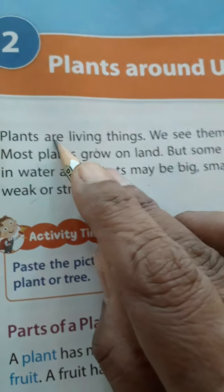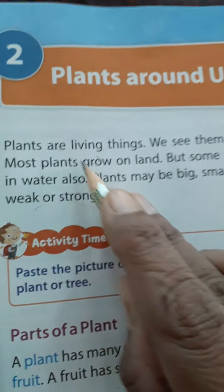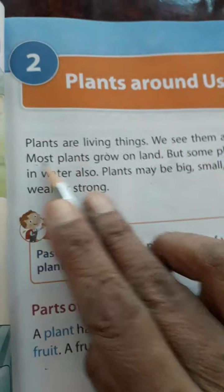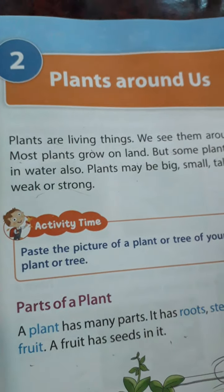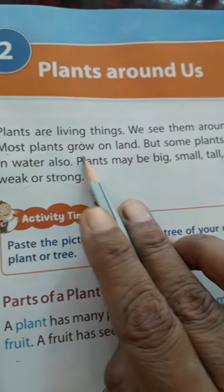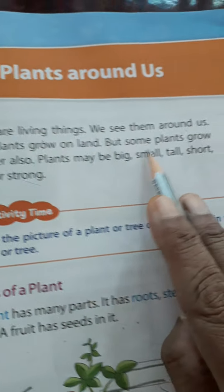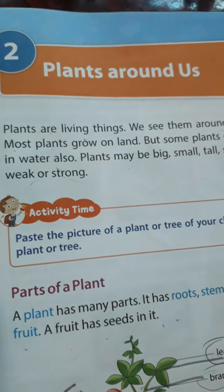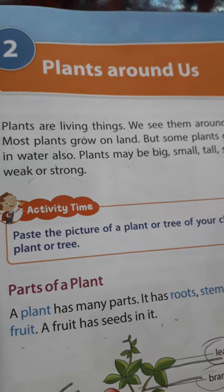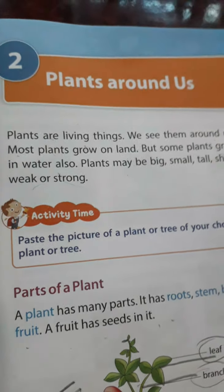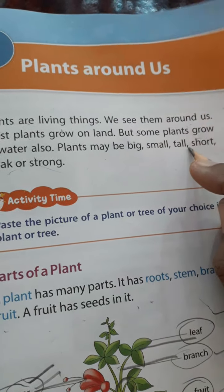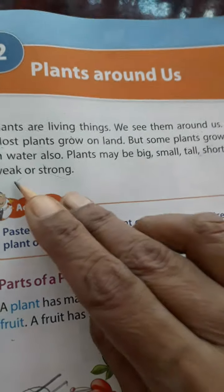Now, according to your chapter, plants are living things — we see them around us. Most plants grow on land, but some plants also grow in water. Plants can be small or large.